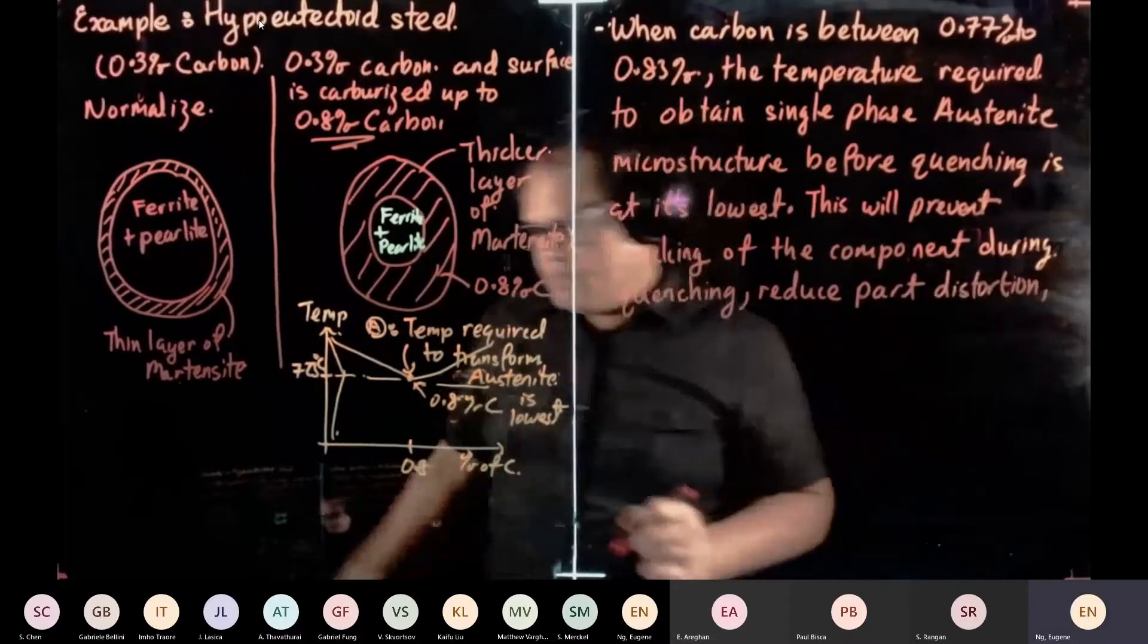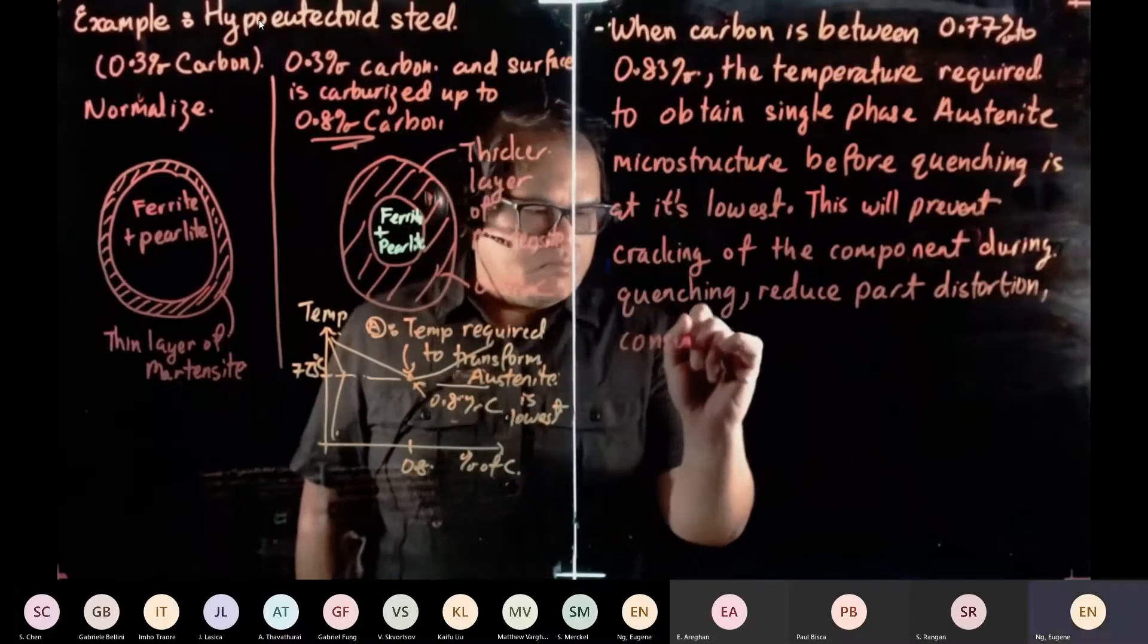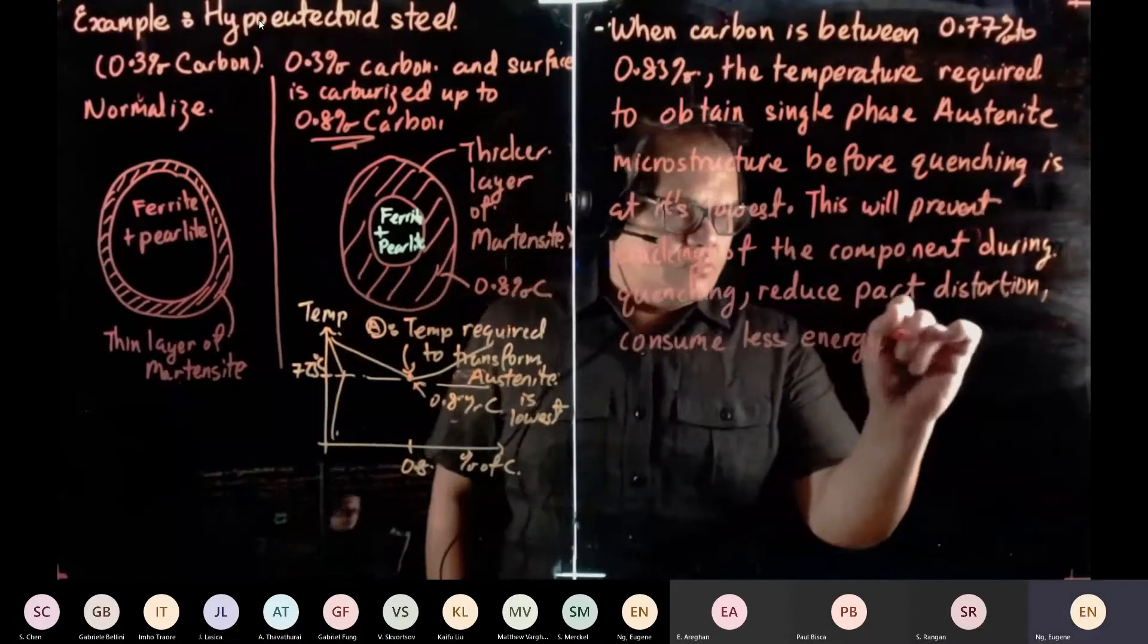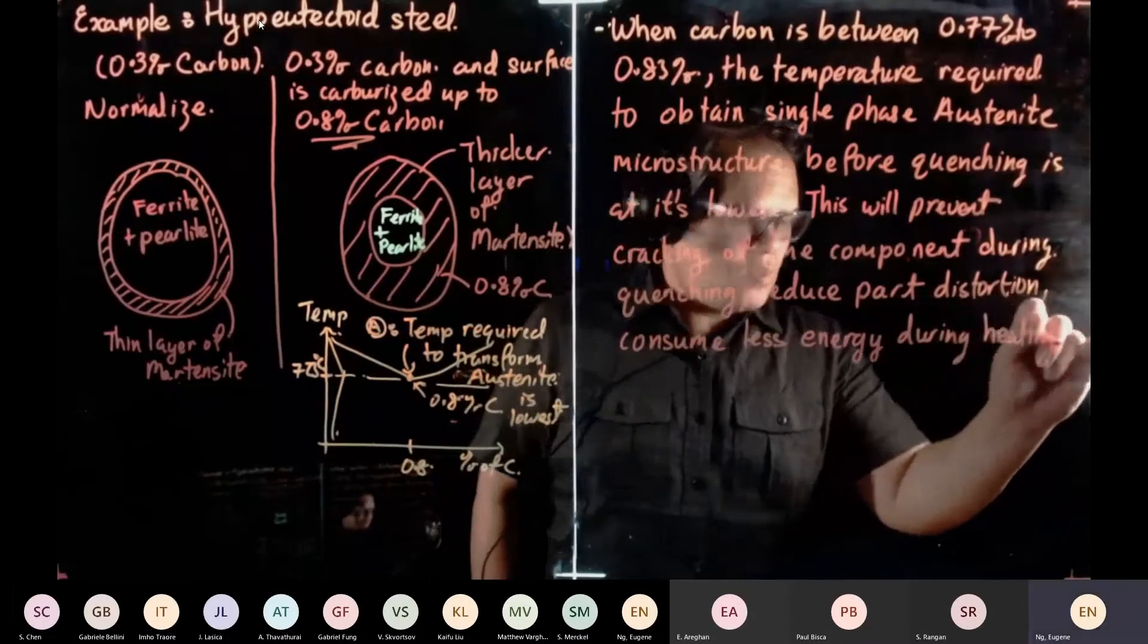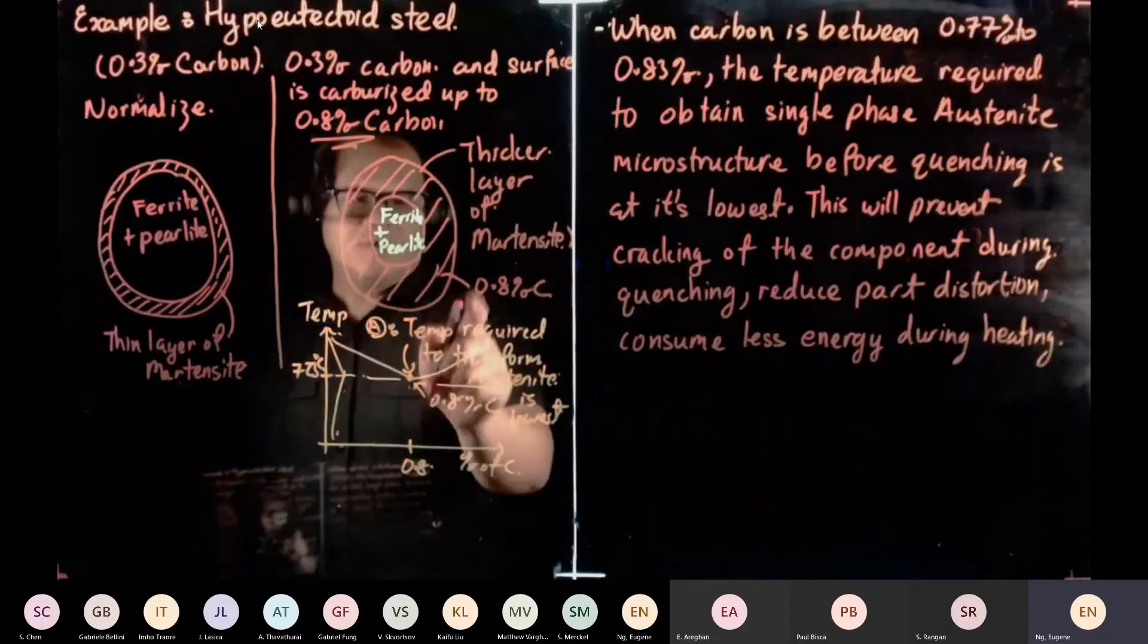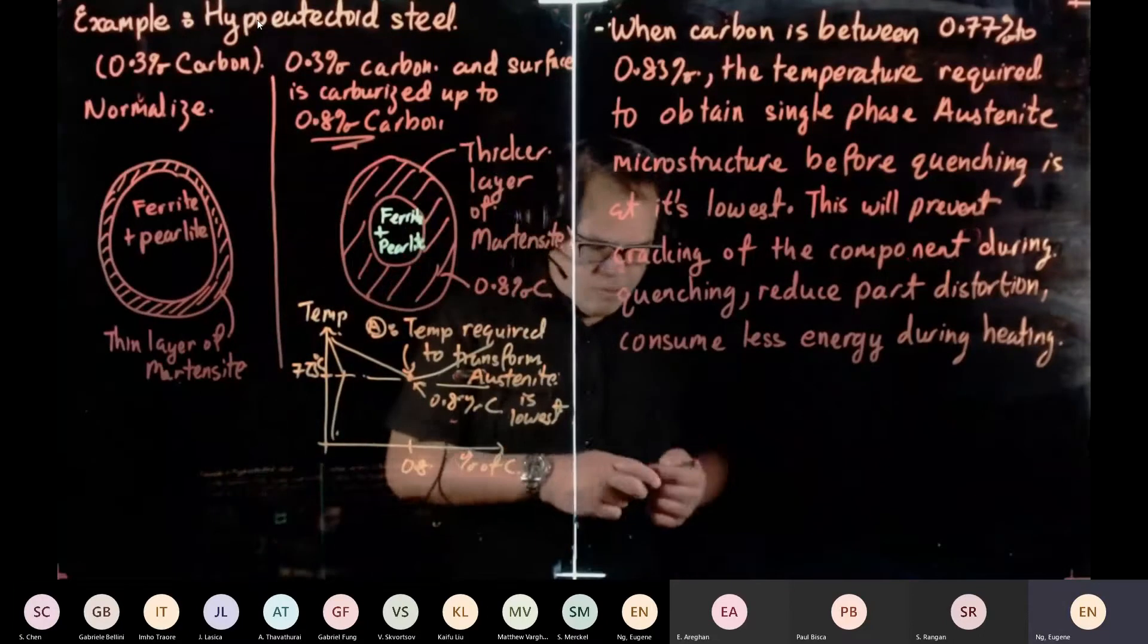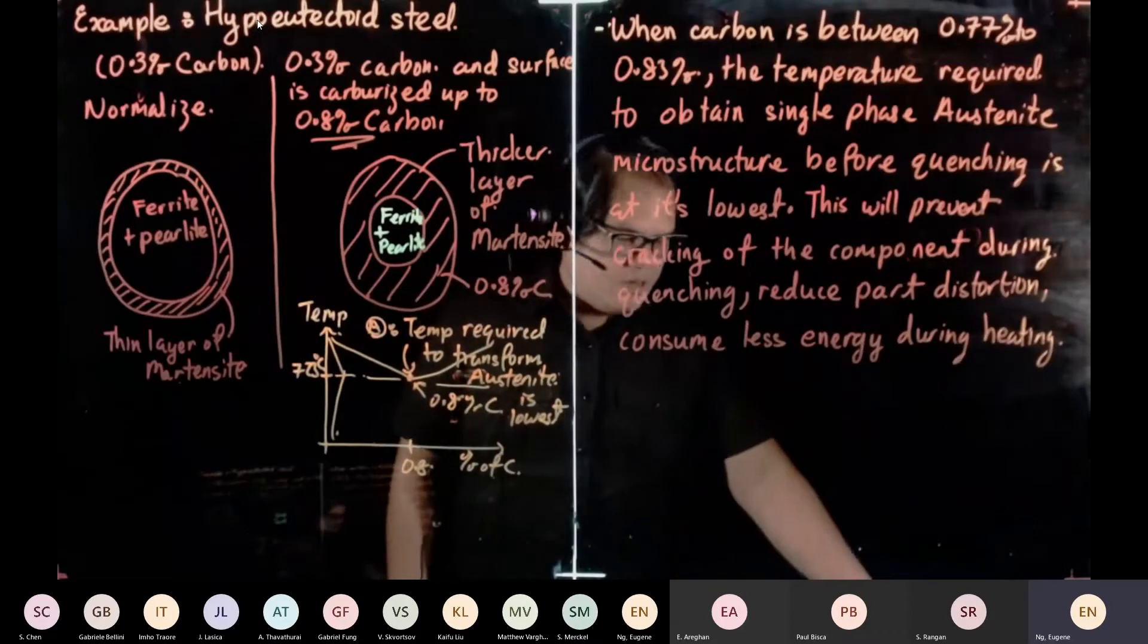We also reduce part distortion. It does not mean eliminate, we reduce, and finally consume less energy during heating. So there's an advantage of heating this, or having 0.8% of carbon, before, or introduce 0.8% of carbon on the surface, and these are the advantages.